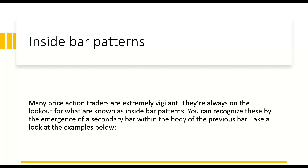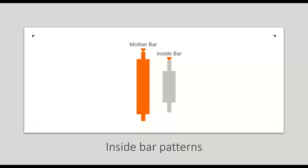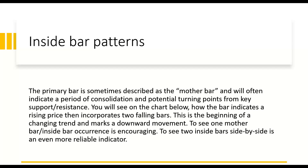Many price action traders are extremely vigilant and always on the lookout for what is known as the inside bar pattern. You can recognize these by the emergence of a secondary bar within the body of the previous bar. We have a whole entire class on what we call the mother bar strategy. The first bar is a longer bar, the opposite color, and then you get an inside bar — the whole price movement is contained within the body of the previous candle. This is a good clue when you're looking at a breakout of a chart pattern that you're looking at a strong breakout. The primary bar is sometimes called the mother bar and will often indicate a period of consolidation and potential turning points from key support and resistance.